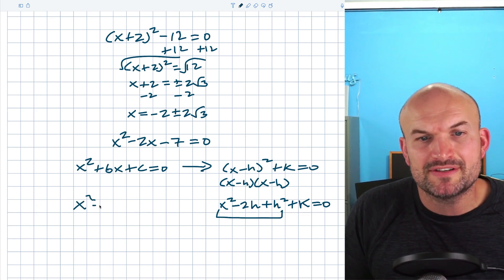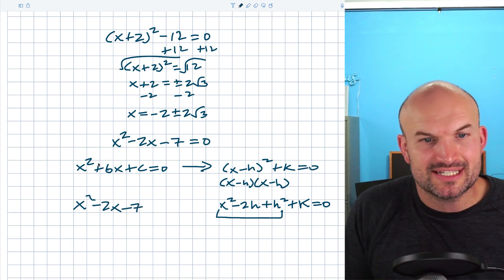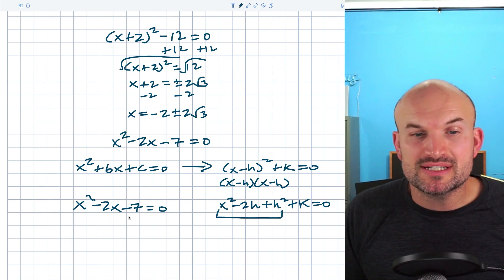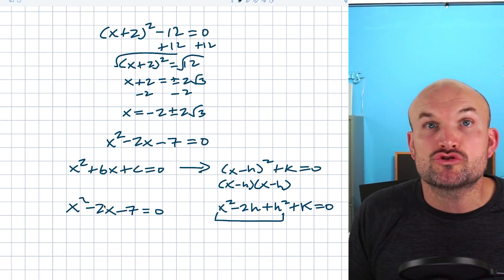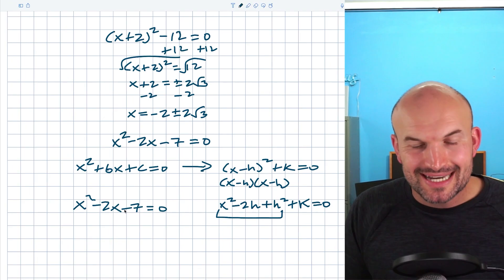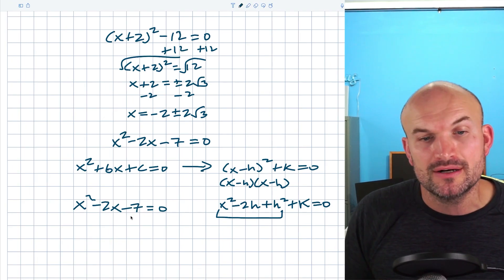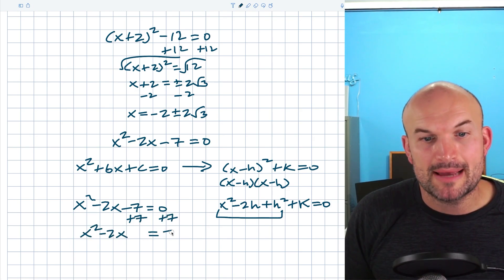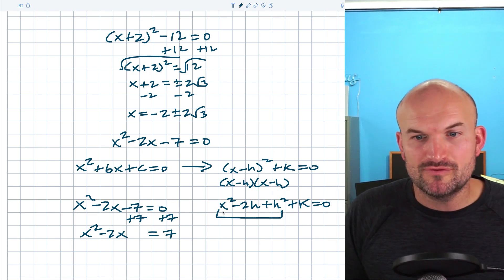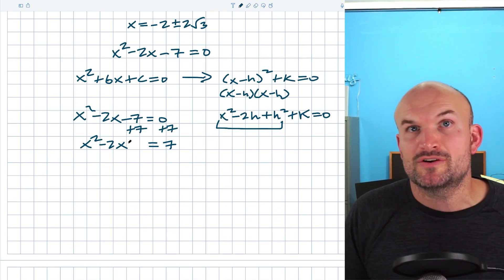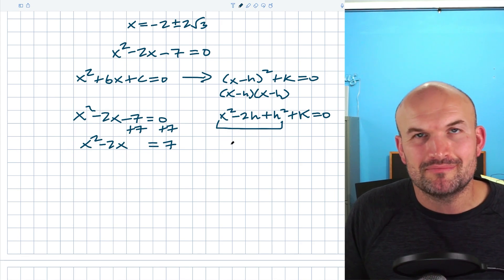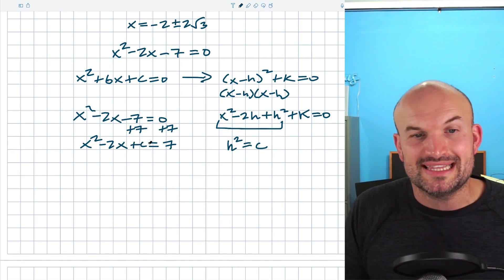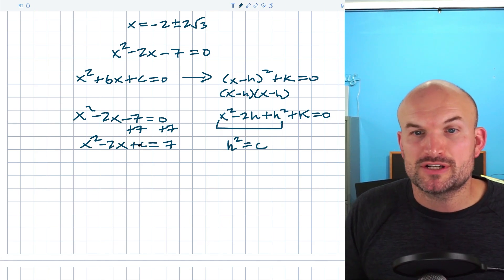So what do we do when we have the equation in standard form and want to rewrite it as a perfect square trinomial? We need to find the value h that creates the perfect square trinomial. Since having the 7 on the same side is confusing, I'll add it to the other side, giving x squared minus 2x equals positive 7. Now I'm looking for the value c that will create the perfect square trinomial.